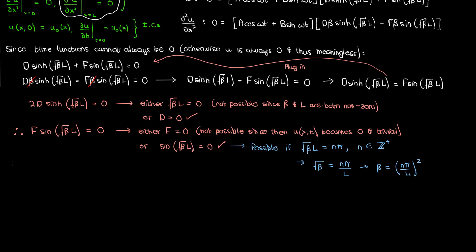Note that we restrict to positive integers because beta cannot be zero. In the last video we showed that the separation constant omega, which beta directly depends on (beta equals omega over alpha), is not allowed to be zero for a physical solution. Since beta equals omega over alpha, omega is given by alpha times n pi over l squared. Since n can be any positive integer, beta and omega both depend on n and can take on multiple values, so it's useful to index them as beta sub n and omega sub n.